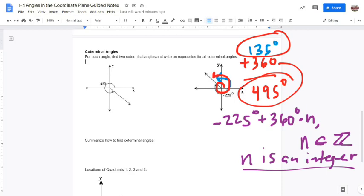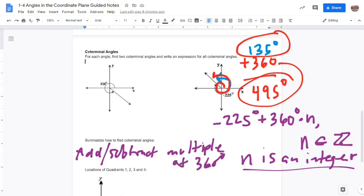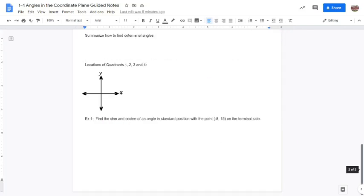Now, to summarize how we find coterminal angles, you just want to add or subtract a multiple of 360. So that could be 0, it could be 360, 720, 360 times anything, and you'll find the coterminal angles to the original angle. So let's finish up the notes here with this final example, but first just a quick word from our sponsors, the Cartesian plane.